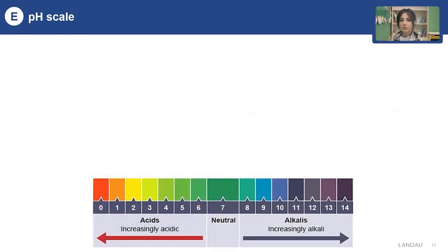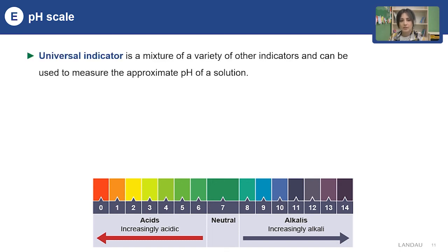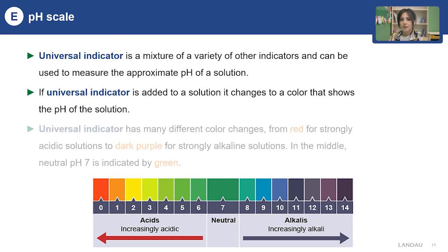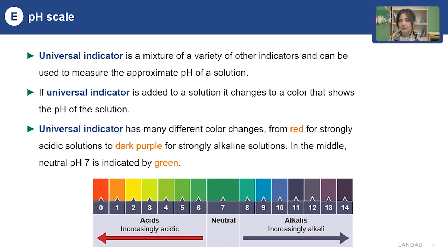In the previous lesson we learned about litmus indicator and red cabbage indicator. In today's lesson, we are going to learn about the universal indicator, which is a mixture of indicators that can be used to measure the pH value of a solution. When you add universal indicator to a solution, you get different colors, which you then match with the numbers on the pH scale. The colors range from red to dark purple, with numbers from 1 to 14. Red shows strongly acidic, green shows neutral, and dark purple shows alkaline substances.